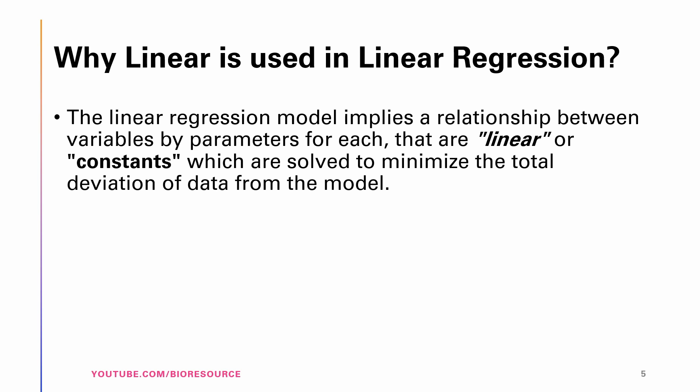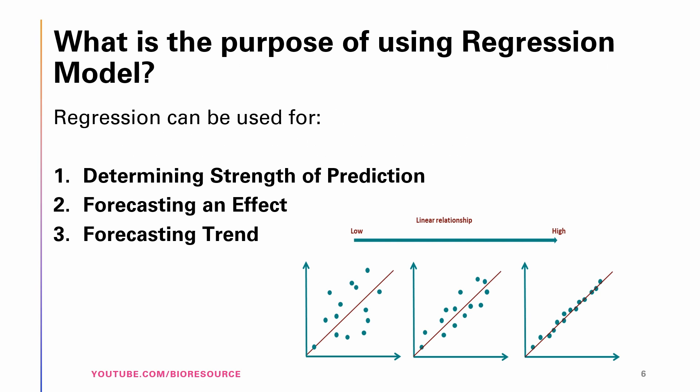The term 'linear' is used in linear regression because the model implies a relationship between variables by parameters for each that are linear or constant, which are solved to minimize the total deviation of data from the model.